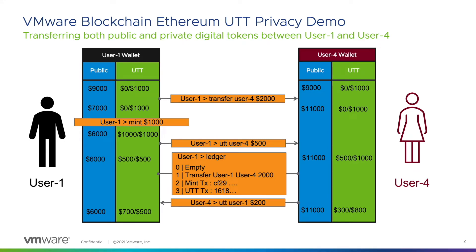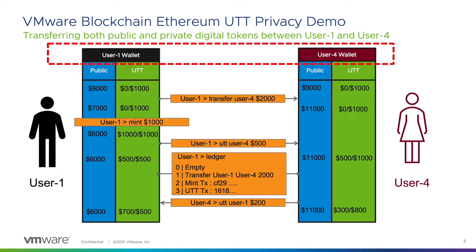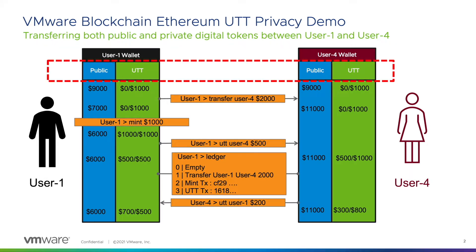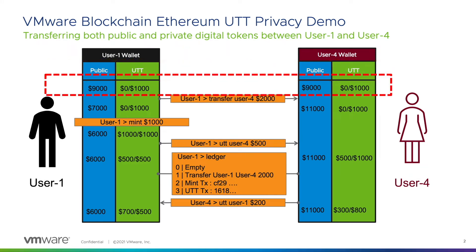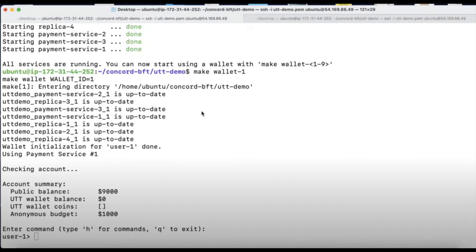User 1 on the left and User 4 on the right are on the same blockchain network. They each have their respective wallets, and each wallet is split into two sections: public and private, which is called UTT. In their respective wallets, they both have nine thousand dollars each and zero dollars on the UTT private side.